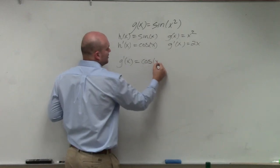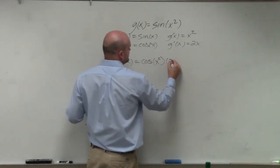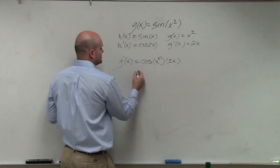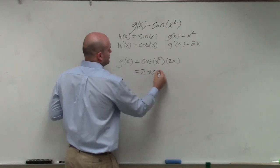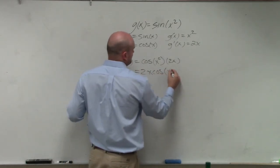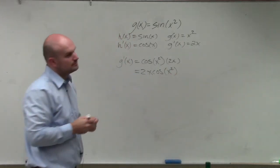So this would be cosine of x squared times 2x, write the 2x in front. Okay?